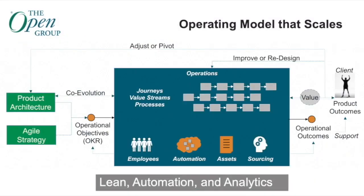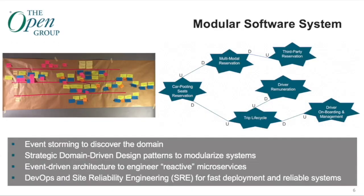The next building block is the operations architecture building block. The idea is to create operating models made of value streams and processes that implement the customer and employee journeys defined by the experience design building block. This leverages lean management, automation, and the power of analytics to continuously improve and redesign those value streams and processes, and automate them with the power of artificial intelligence.